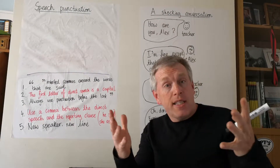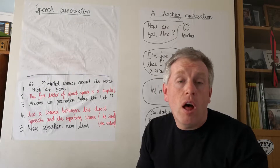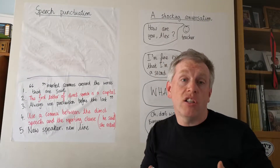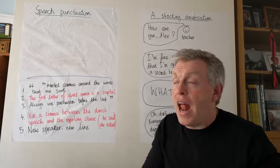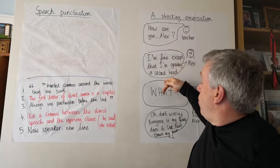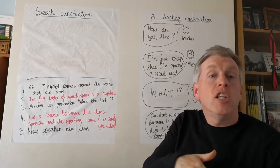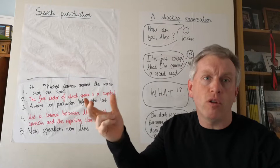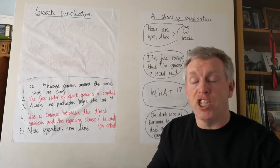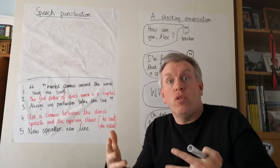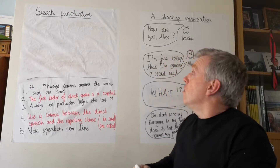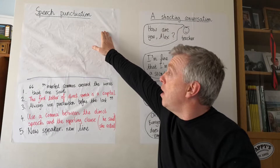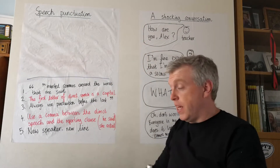Hello, everyone. This is speech punctuation part three, and I hope everybody has had a chance to write their plan. That's the one where we have six bubbles where we've planned out two people talking and what they're saying to each other. But of course, now we need to turn it into the start of a story. So we need to make sure we've got our plan in front of us where we can see it.